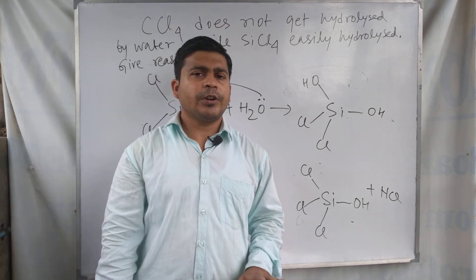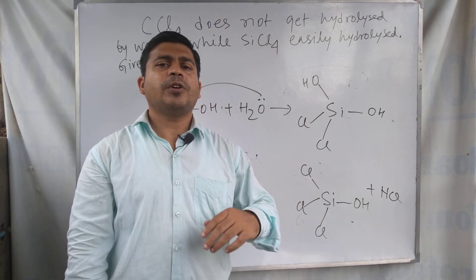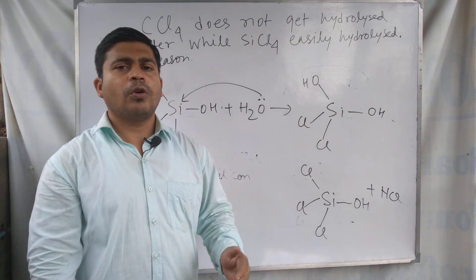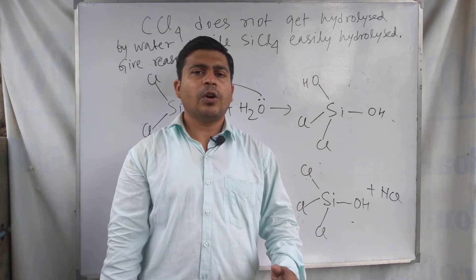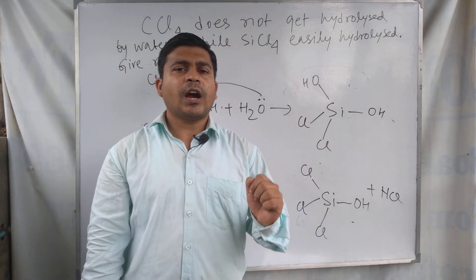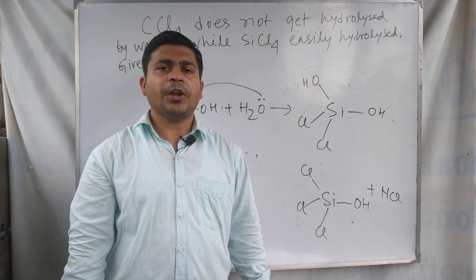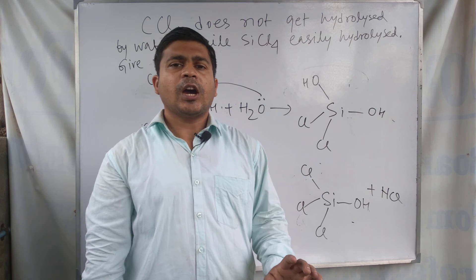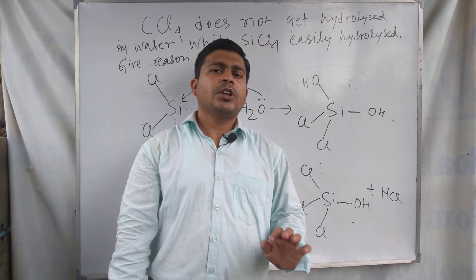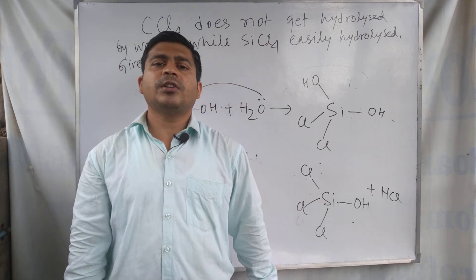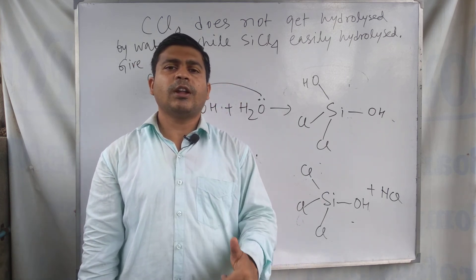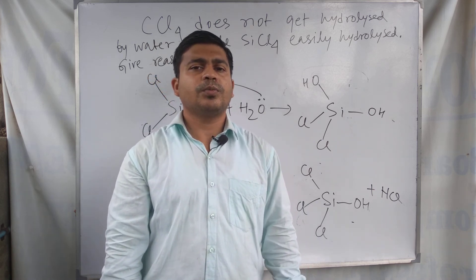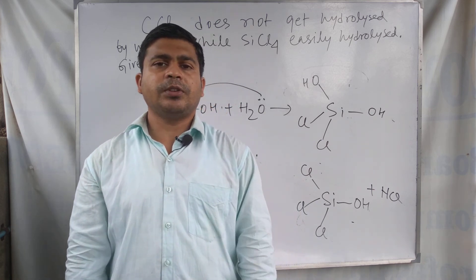But in the case of carbon tetrachloride, carbon cannot extend its covalency from 4 to 5. So due to the lack of vacant d orbitals, carbon tetrachloride cannot get hydrolyzed. If you find this discussion useful, you can like this video, and if you find this channel useful, you can subscribe.